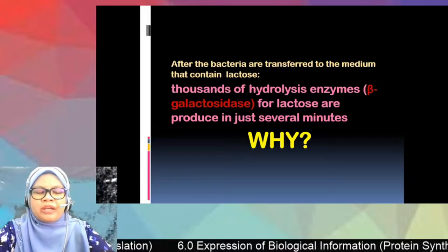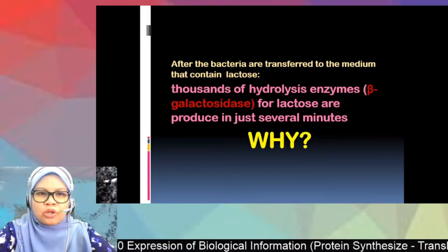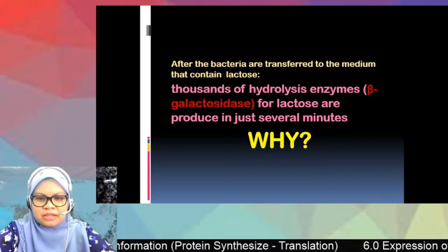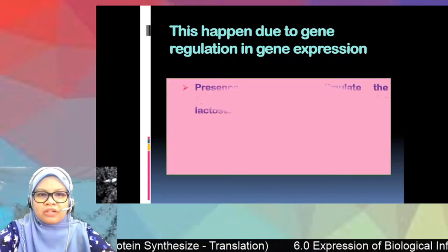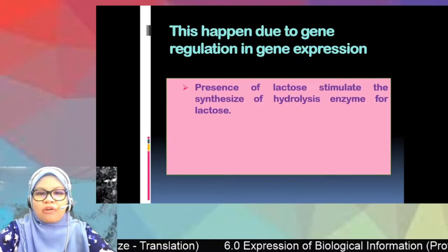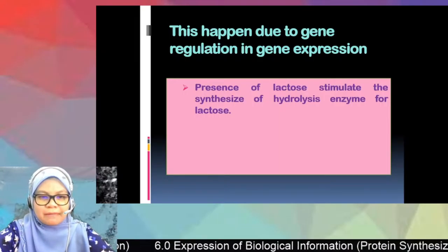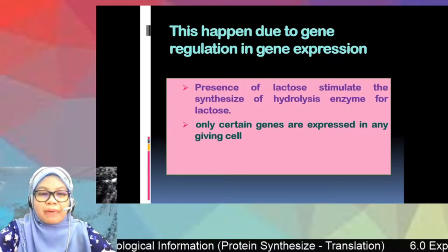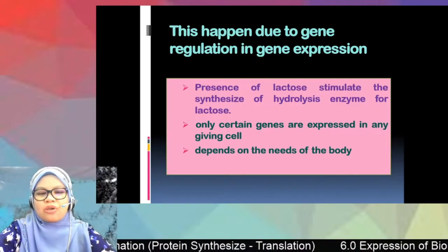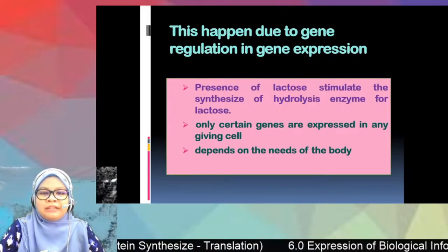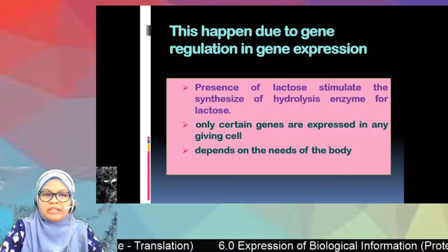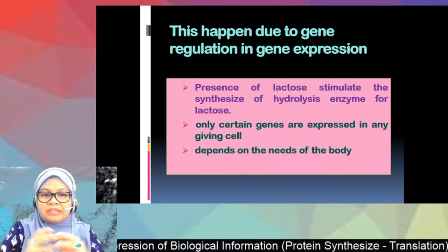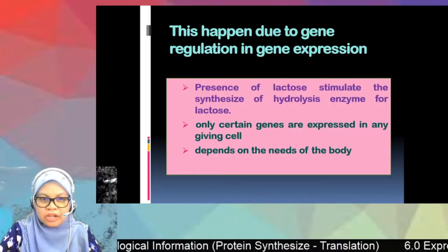When the bacteria is cultured in the medium without lactose, no beta-galactosidase is produced. But if E. coli is cultured in the medium with lactose, beta-galactosidase is present. This is referred to as gene expression — the presence of lactose stimulates the synthesis of the hydrolyzing enzyme. Only certain genes are expressed in any given cell depending on the needs of the body, so the enzyme is only produced when the body needs it. That is the concept of gene regulation.